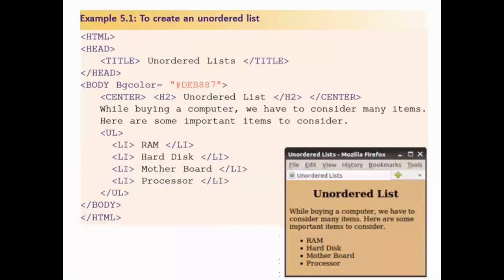An unordered list, also known as a bulleted list, produces bullet points as output. This is done with the help of the ul tag, and the items are placed with the help of the li tag.